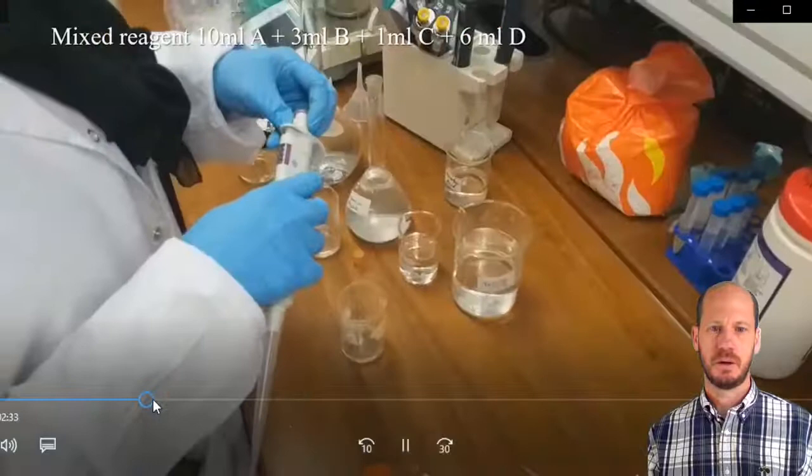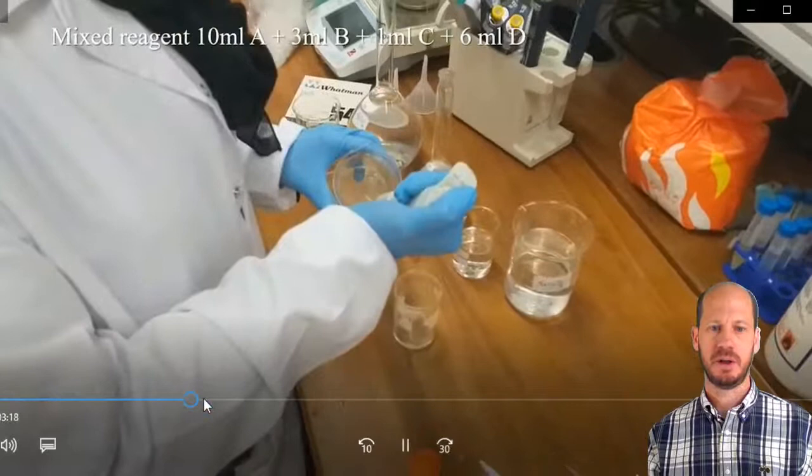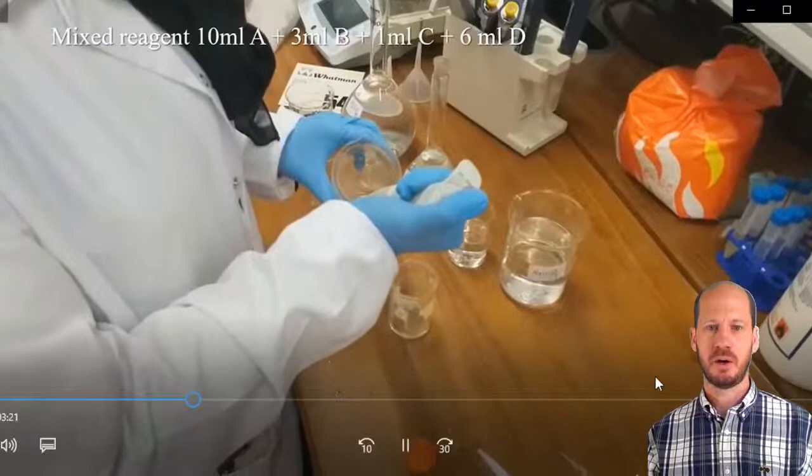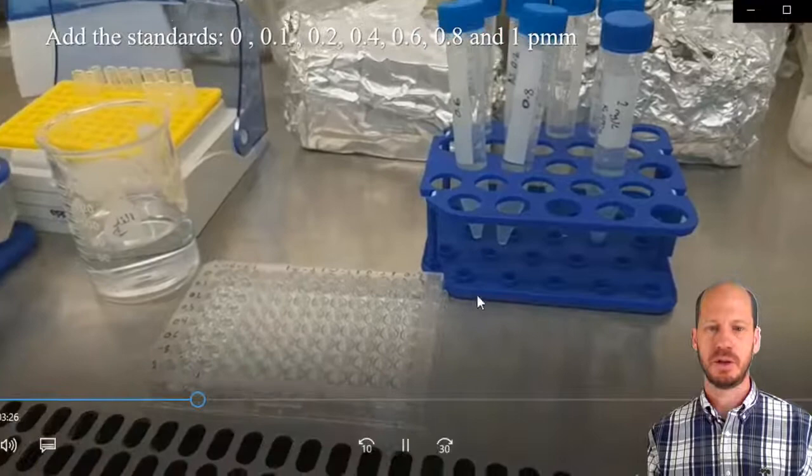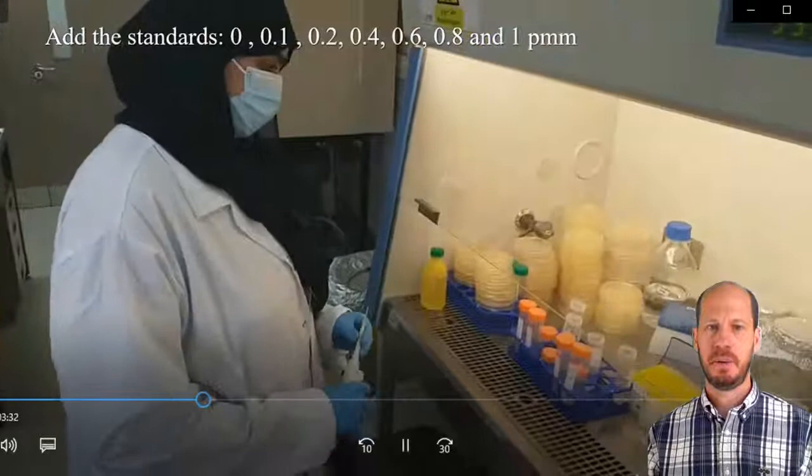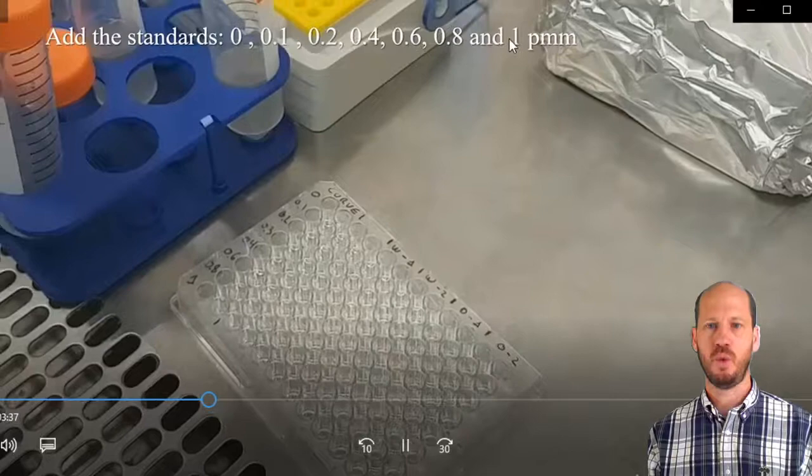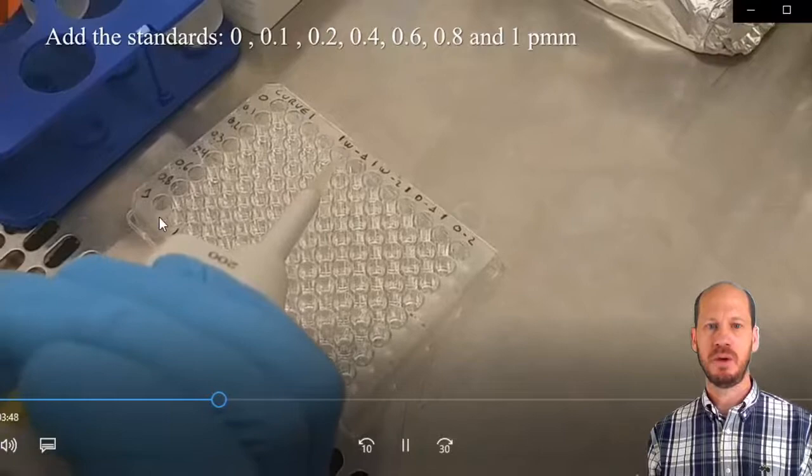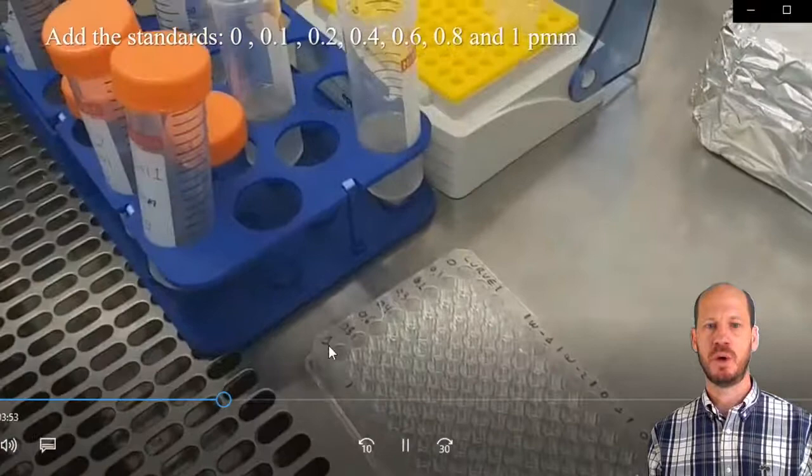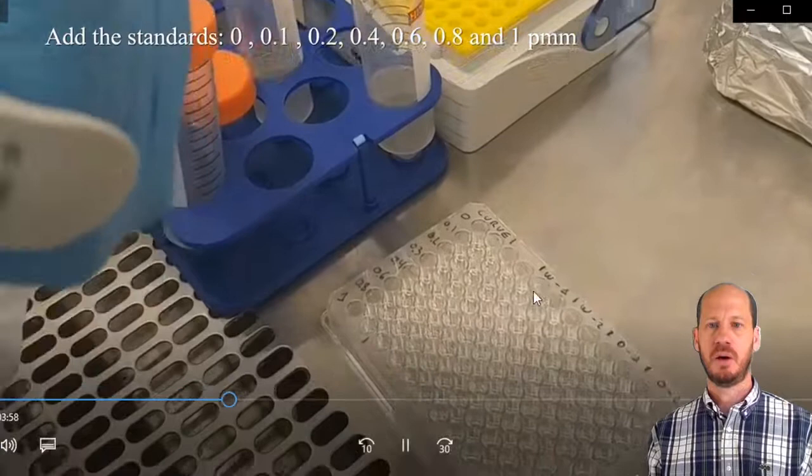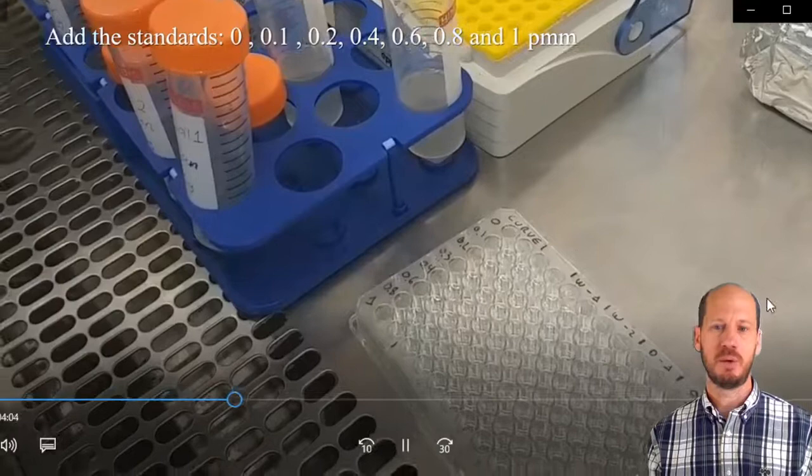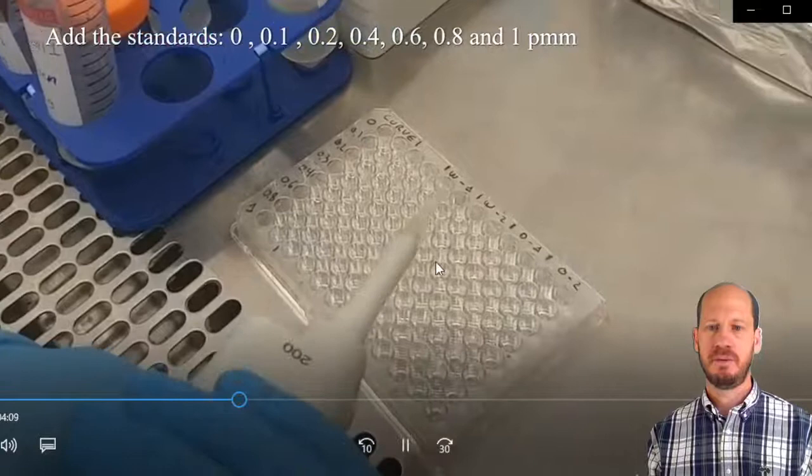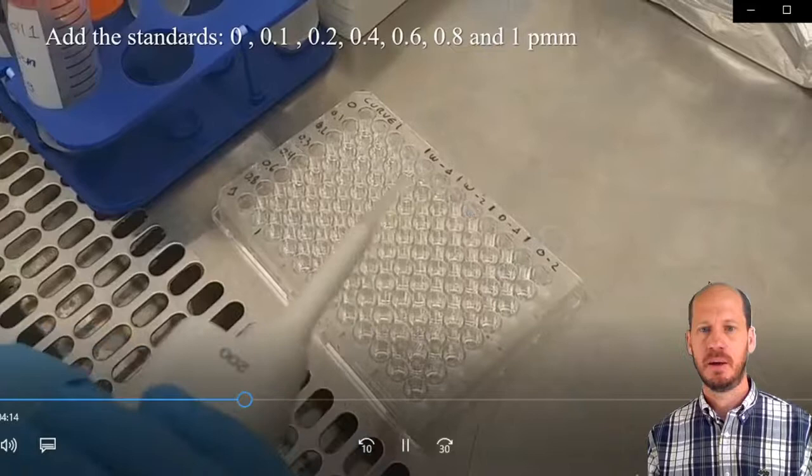Next thing is we're going to prepare our microplate. We're going to pipette our standards. The standards contain from zero up to one ppm: zero, 0.1, 0.2, 0.4, 0.6, and 0.8. We pipette them in the first two columns of the plate. It's marked zero to one ppm on the side, marked curve. We also have plenty of spaces to pipette our samples. You can place samples wherever you like on this plate, you just need to know exactly where they are.